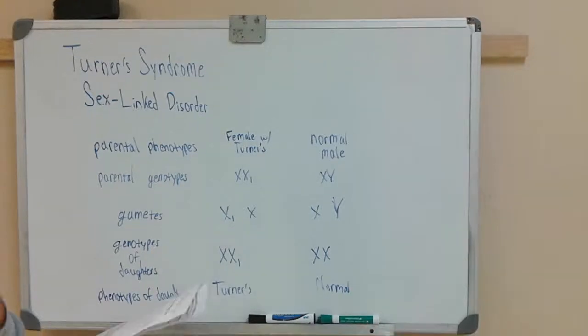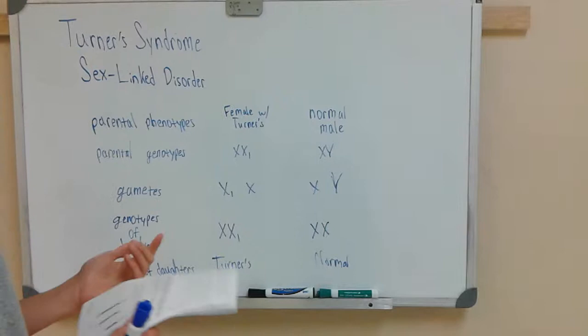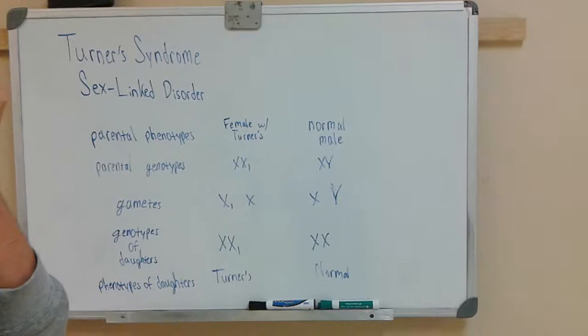Turner's syndrome is a disorder caused by homologous chromosomes that fail to separate during anaphase, known as non-disjunction. This occurs because of a chromosome mutation, specifically deletion.